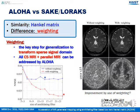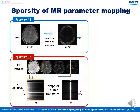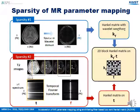To apply ALOHA to MR parameter mapping, we utilize two kinds of sparse properties. First, sparsity of the spatial domain Y, enforced by K-space weighting. Second, the sparsity of the Fourier domain along the parametric dimension F. Each scan of images has different contrast, but they share the detailed structures. Thus, the Fourier transform of the parametric domain is sparse. So we can construct 2D Hankel matrices on the K-Y-T domain.